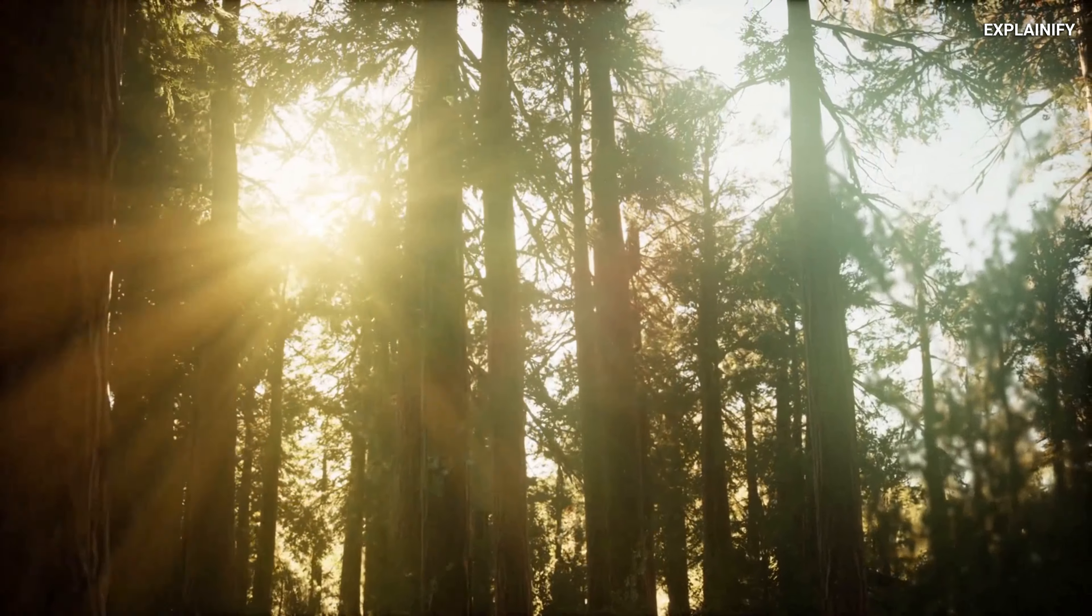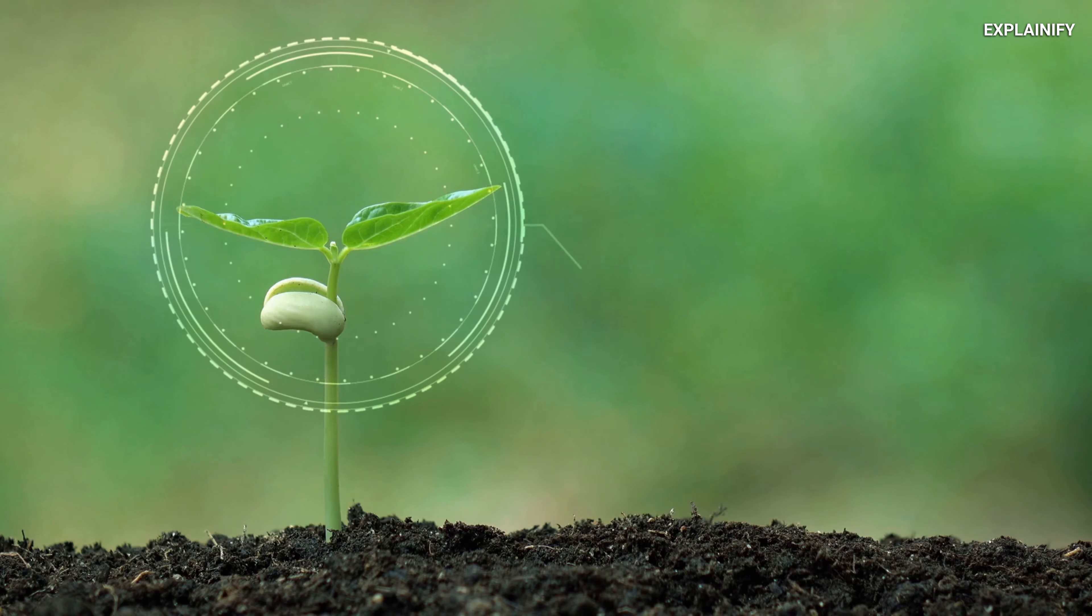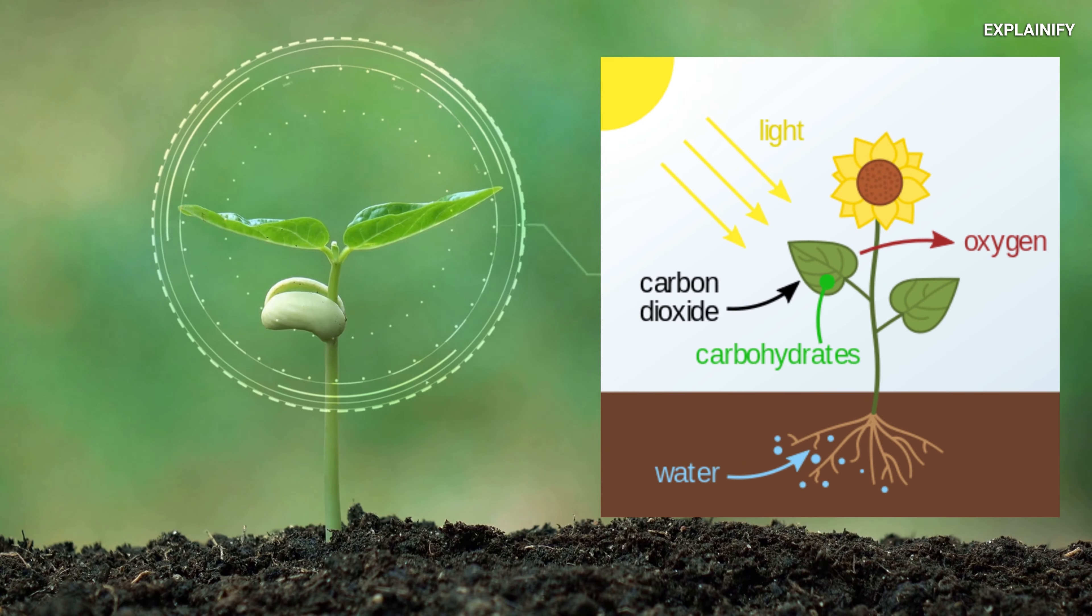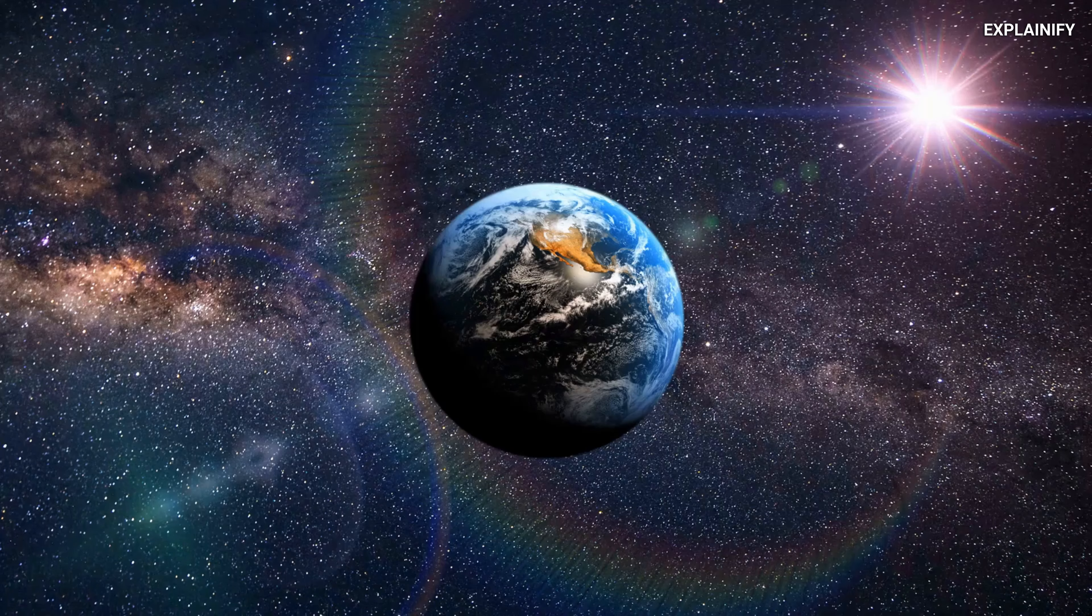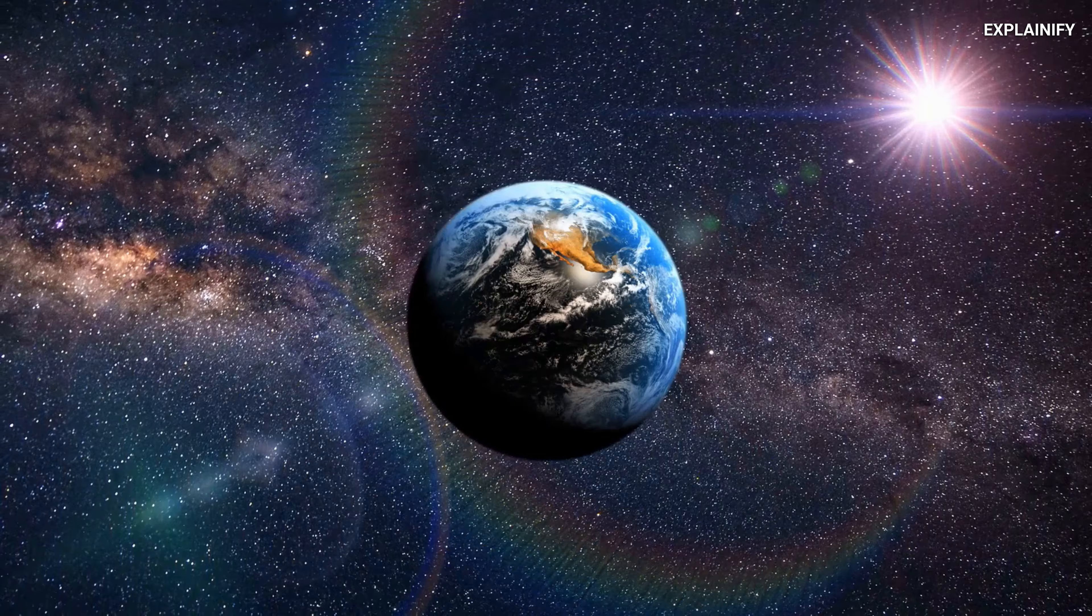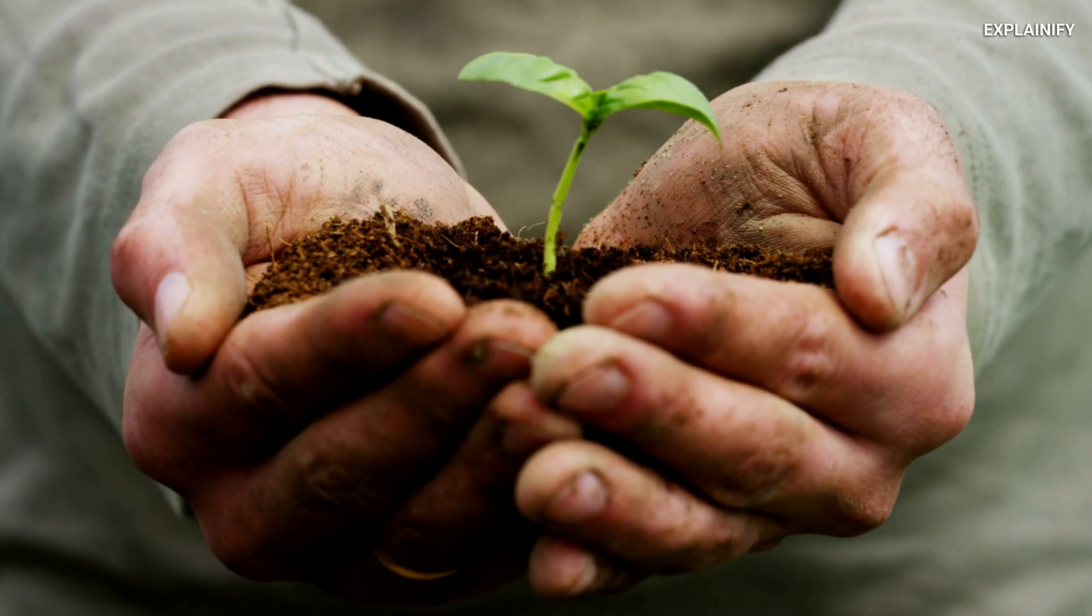For example, the order, the entry point for order in the biosphere is essentially photosynthesis. So, essentially what's happening is that you're getting ordered energy from the sun and disordered energy as heat is being re-radiated back into space. And there's almost an order gap. Life essentially borrows some order for a while.